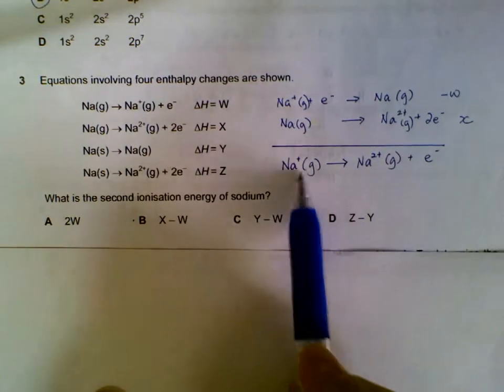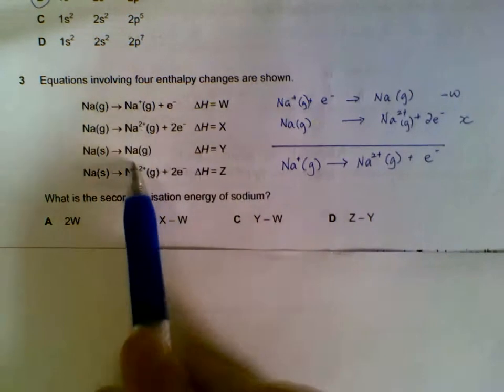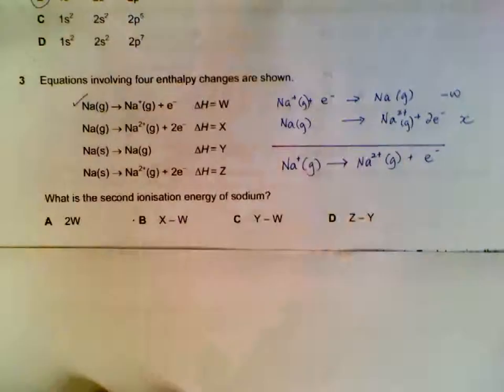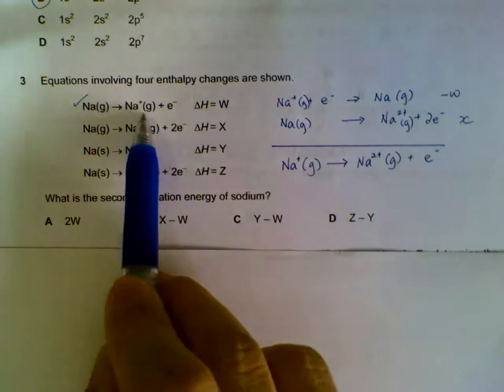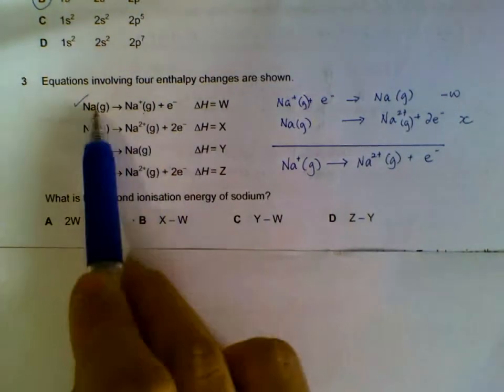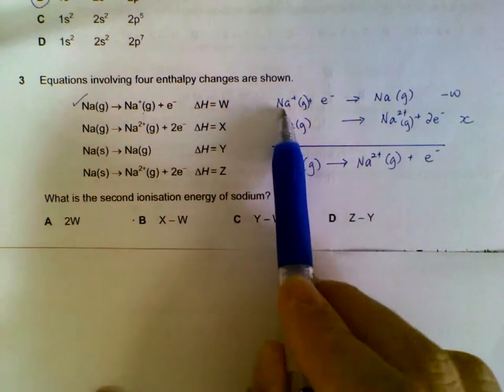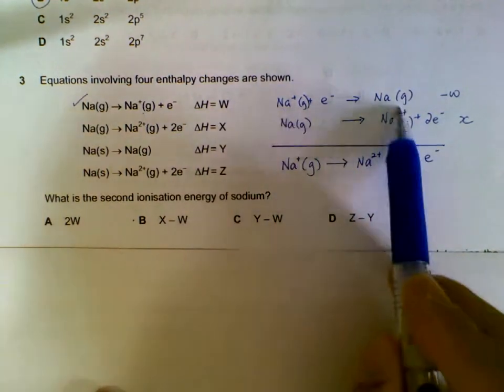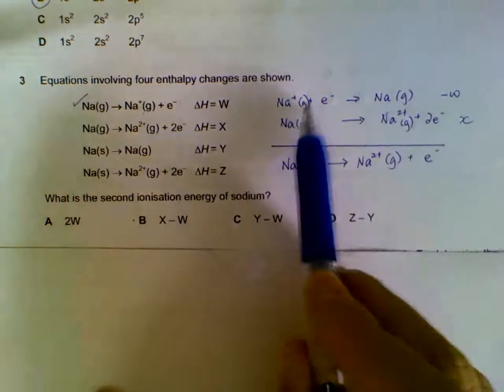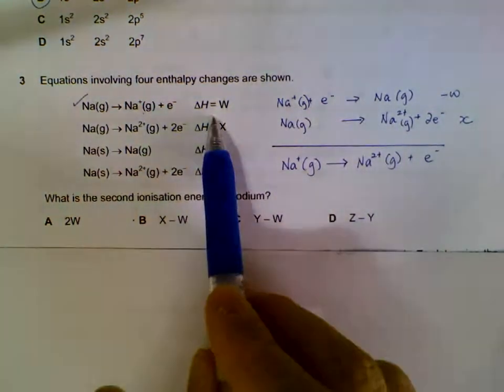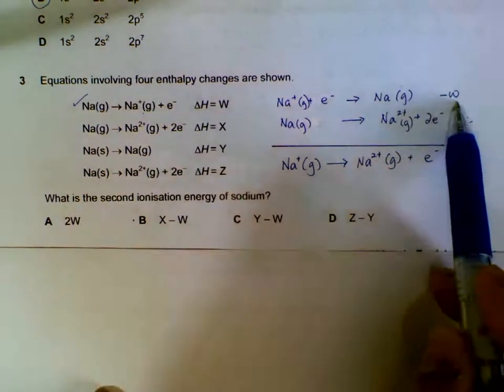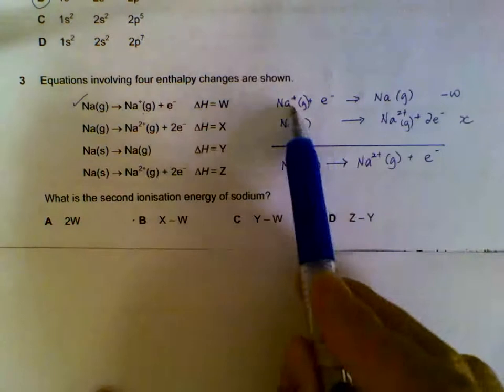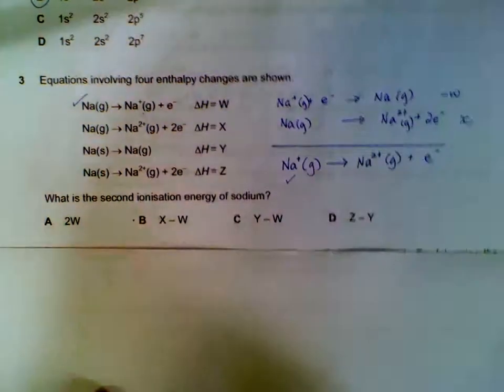We see that we need Na+ gas, and it is given by this equation. However, Na+ gas is on the right side of this equation, so we flip the whole equation around and write it out with Na+ on the left side and Na gas on the right side. Because we flip it around, the enthalpy change W will become minus W.